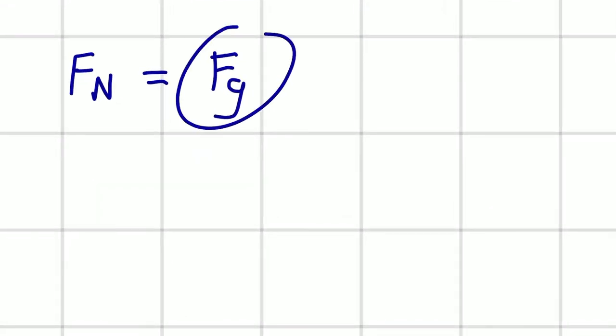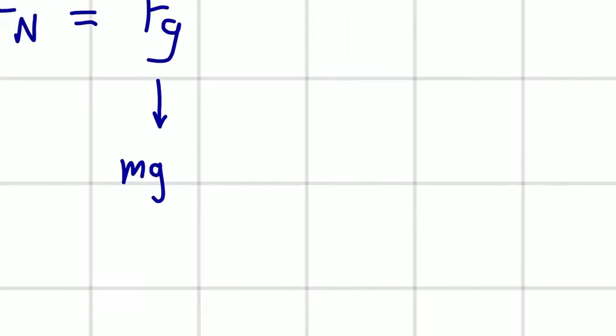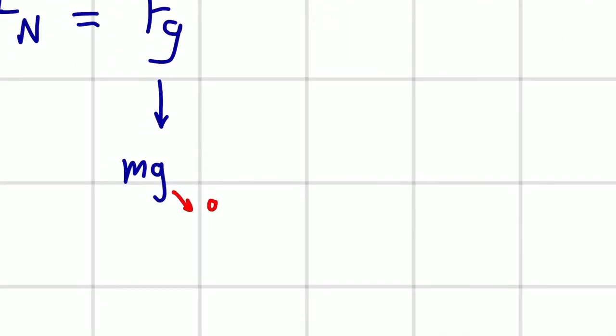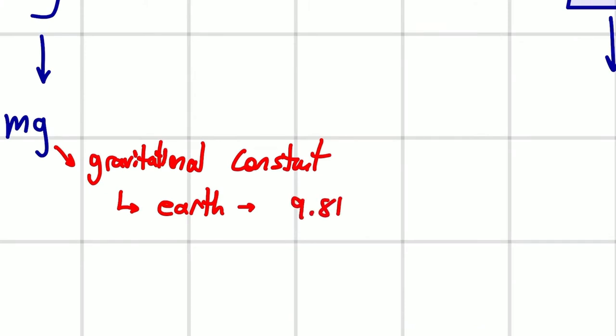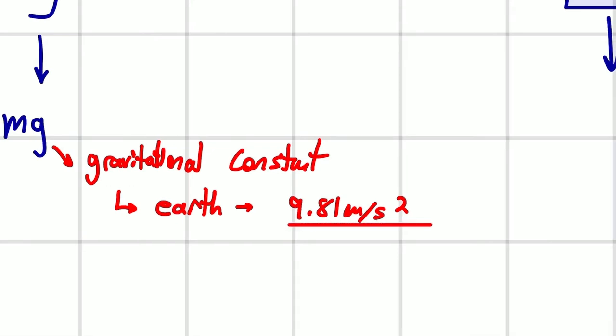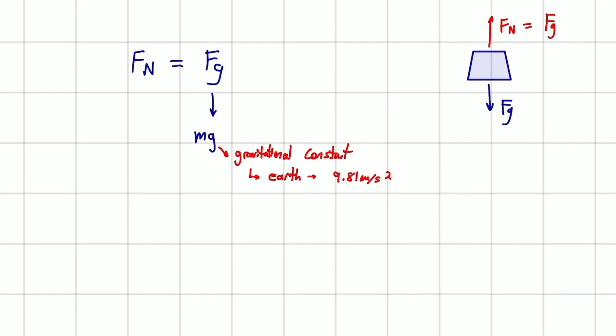So our Fn is equal to Fg. And what is Fg? Fg is mass times our gravitational constant, which on Earth is 9.81 meters per second squared. Remember, that's the acceleration due to gravity on Earth. That's our value, G.